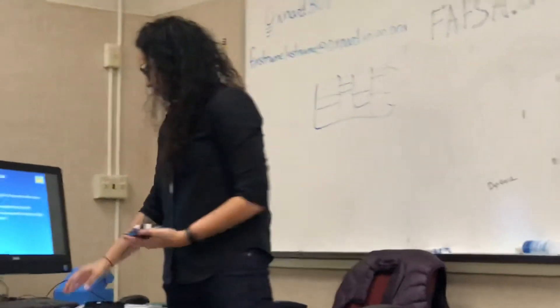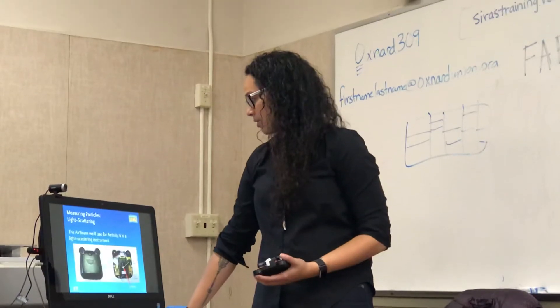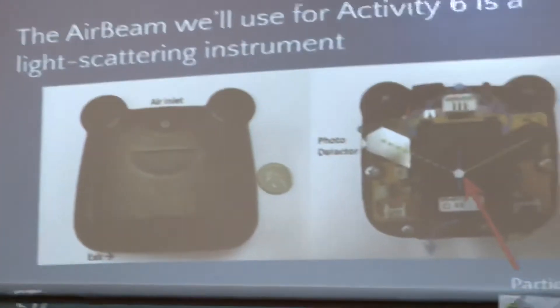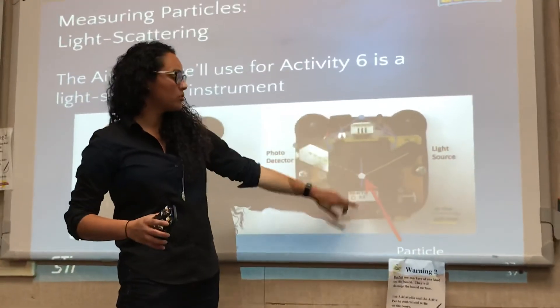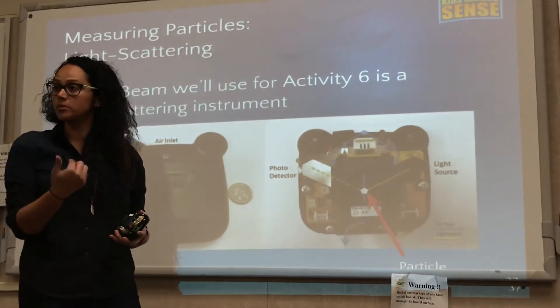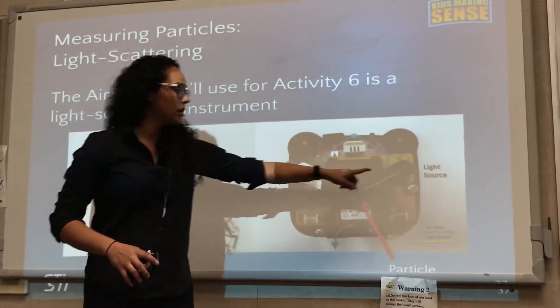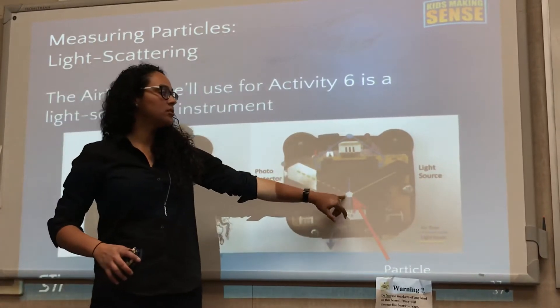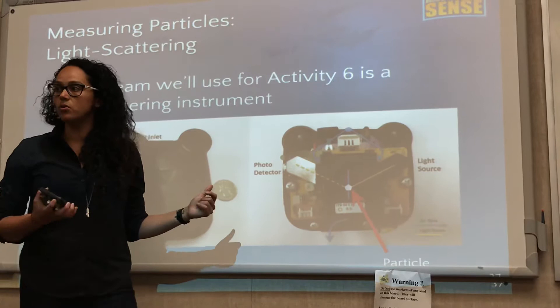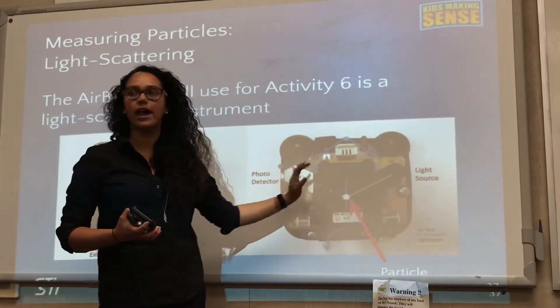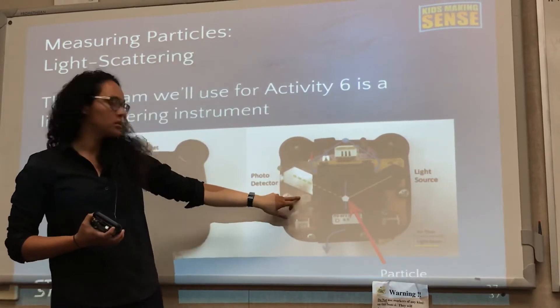Basically, this is going to work the same way. You're going to draw air through, except instead of collecting onto a piece of filter paper, you have a continuous light source going through, and then a kind of chamber where the particles can pass through using a fan — instead of a pump circulating the air. You've got a light source and then a photo detector, and essentially what this does is measure the scattering. Particles scatter light, so the more particles you have in there, the more scattering you can get, and that's what this detector is going to measure.